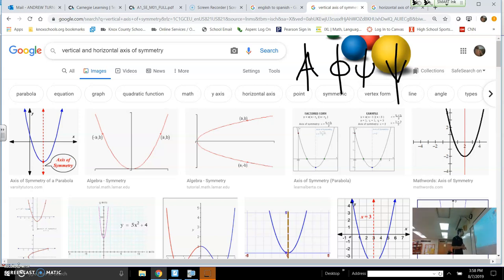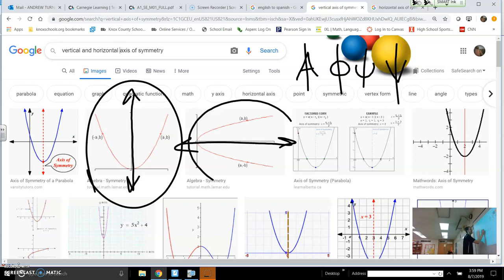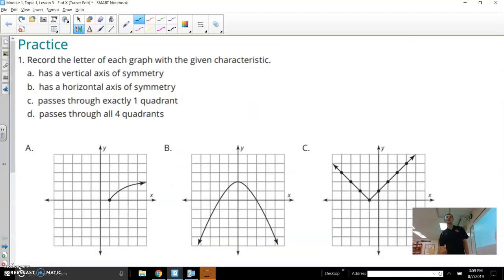For this one, we're talking about a vertical line that would cut a graph in half, kind of like this one. Or maybe it's more of a horizontal line that cuts the graph in half. So that's kind of what we mean by this idea of a horizontal or vertical axis of symmetry.